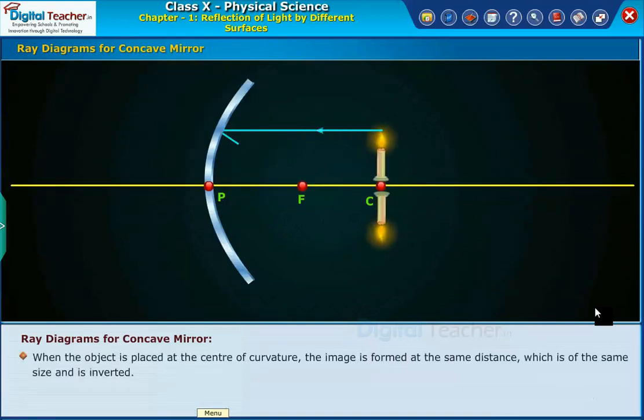When the object is placed at the center of curvature, the image is formed at the same distance, which is of the same size and is inverted.